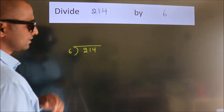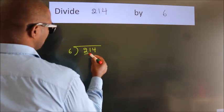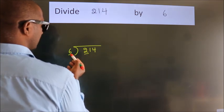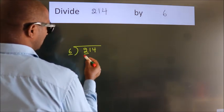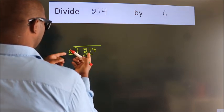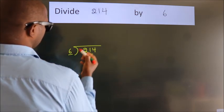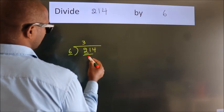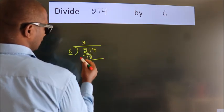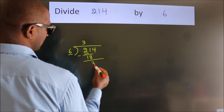Next. Here we have 2, here 6. 2 is smaller than 6, so we should take 2 numbers: 21. A number close to 21 in the 6 table is 6 threes 18. Now we should subtract. We get 3.